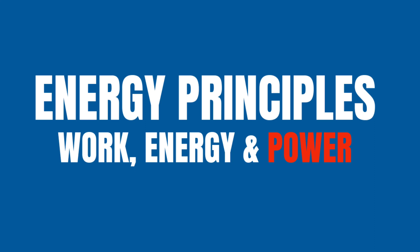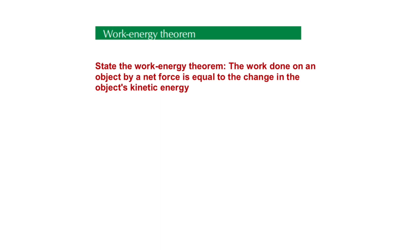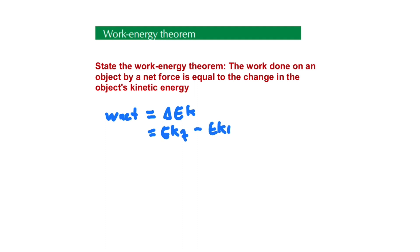Work-energy theorem — let's go ahead and take a look. By definition, the work-energy theorem states that the work done on an object by a net force is equal to the change in the object's kinetic energy, where the change in kinetic energy is kinetic energy final minus kinetic energy initial. We can actually derive this equation to see how it comes about.